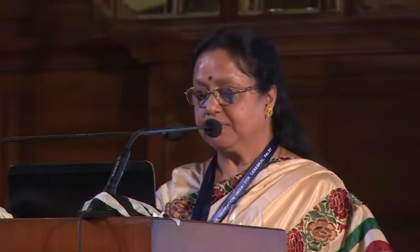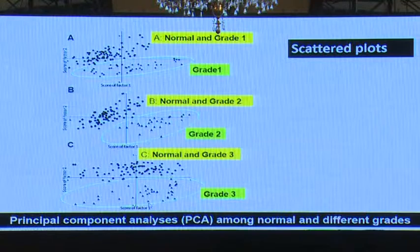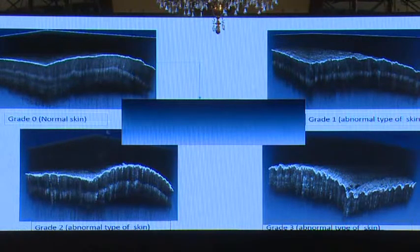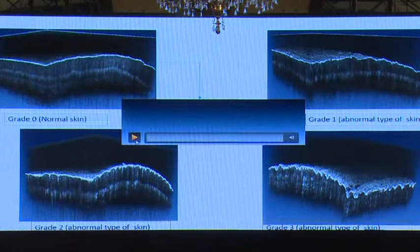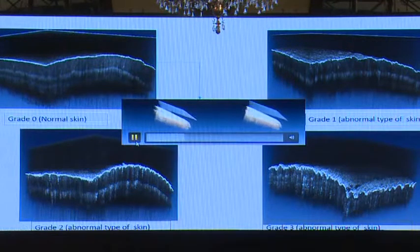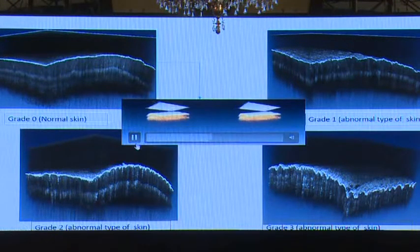This is the plot we obtained from PCA analysis of Raman spectroscopy. We found a lot of classification differences among the biomolecules — all grades are explicitly different from each other and can be accurately classified. This is also the 3D representation of the OCT pictures giving grade 0 normal, grade 1, grade 2, and grade 3.